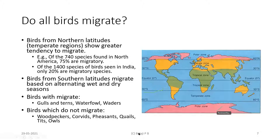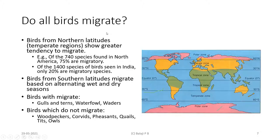Birds that do not migrate include woodpeckers, corvids — crows, treepies, magpies — pheasants like peacocks, quails, tits, and owls. The vast majority of owls don't migrate, though short-eared owls and dusky eagle owls are exceptions. By and large, birds belonging to these families do not migrate. So the answer to 'do all birds migrate?' is no — birds in northern latitudes show a greater tendency to migrate, birds in southern latitudes less so.